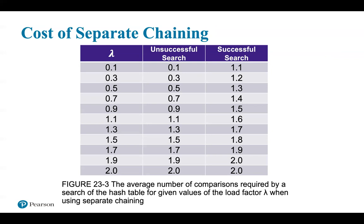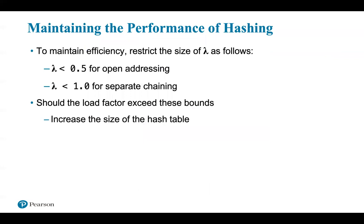To maintain the performance of hashing, collisions and their resolutions typically cause the load factor lambda to increase and dictionary operation efficiency to decrease. You should restrict lambda as follows: lambda less than 0.5 for open addressing, and lambda less than 1 for separate chaining. Should the load factor exceed these boundaries, you must increase the size of the hash table.